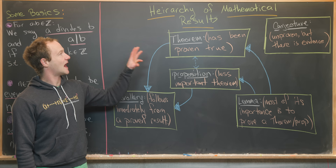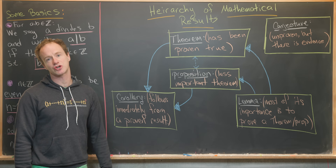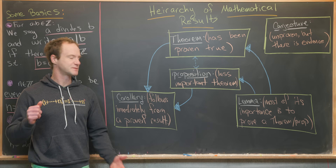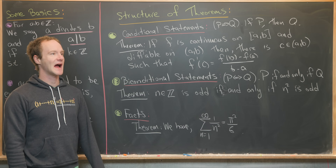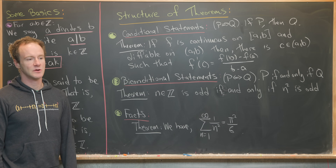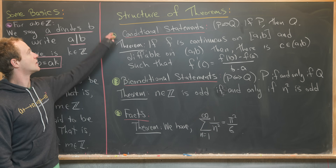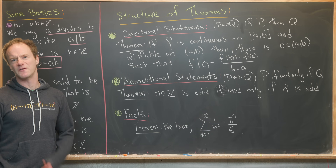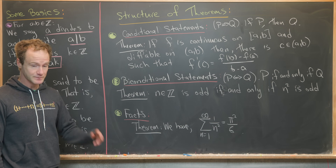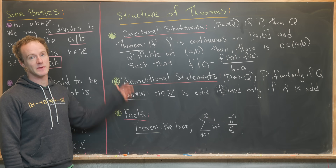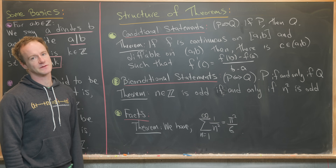Now that we've looked at the hierarchy of mathematical results, let's look at different wordings of mathematical results — specifically, the structure of theorems, propositions, lemmas, corollaries, and so on. This is by no means a full list, but it will get us started proving theorems.